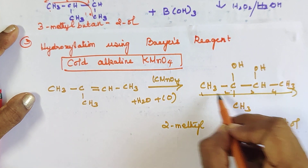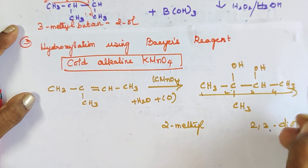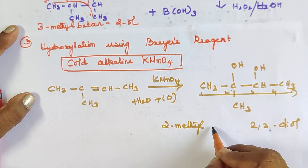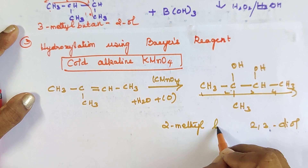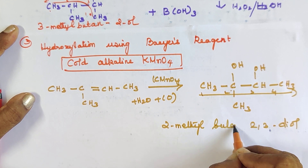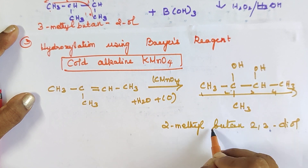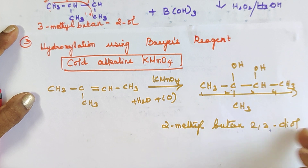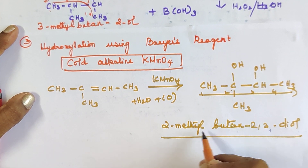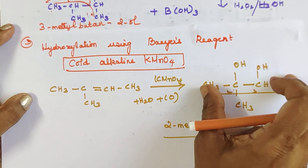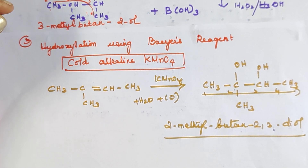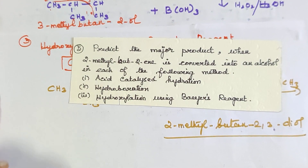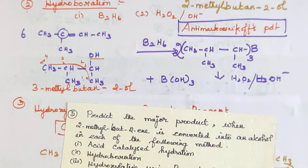The straight chain has 4 carbon atoms (butane), with a methyl branch. The product is named 2-methyl-butane-2,3-diol. This is the answer for the third method using Baeyer's reagent.